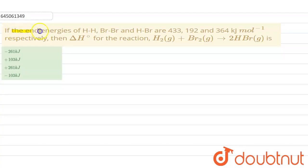It is given that if the bond energies of H-H, Br-Br, and H-Br are 433, 192, and 364 kilojoules per mole respectively, then we have to calculate delta H for this reaction. Now, if bond energies are given...